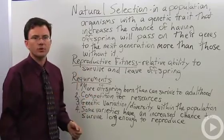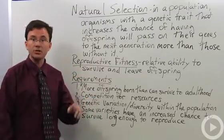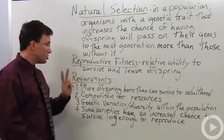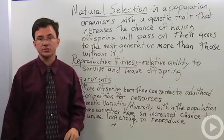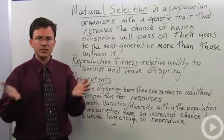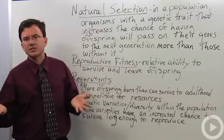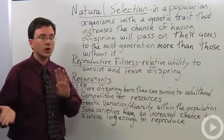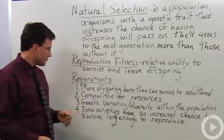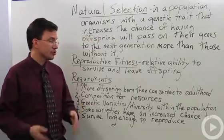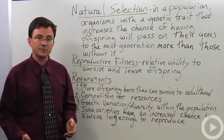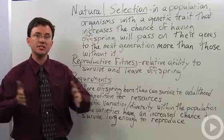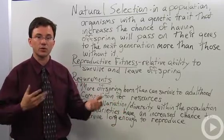What are some of the requirements of natural selection? First, you need to have more offspring being born than can survive to adulthood. Second, you need to have competition for resources — resources can refer to mates, food, light, water, or all sorts of things. Third, you need to have genetic variation or diversity within the population — not a group of individuals who are all the same, but diversity for natural selection to work upon.